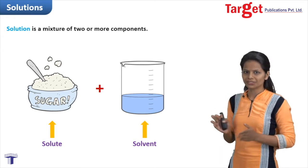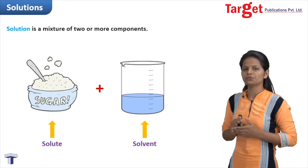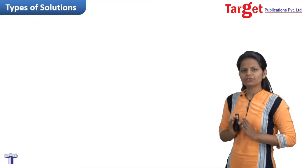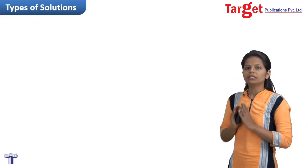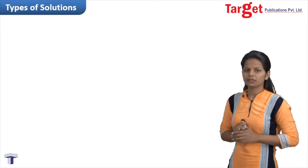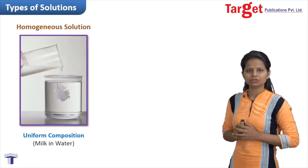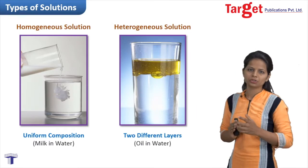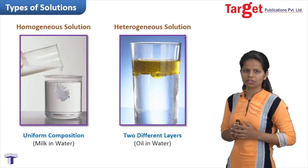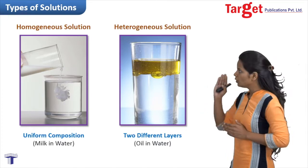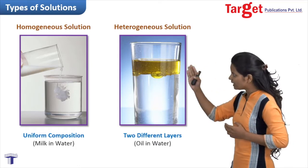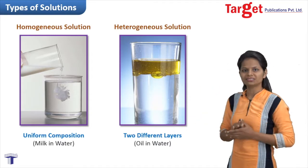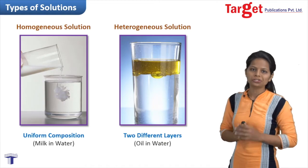Now that we are clear with the concept of solute and solvent, let's move on to the next classification which is based on the number of phases present in the solution. Solutions are classified into two types: homogeneous or heterogeneous. The word homogeneous breaks into 'homo' meaning one or uniform, and 'geneous' meaning phase. So wherever you see one uniform phase throughout the solution, you call it a homogeneous solution.